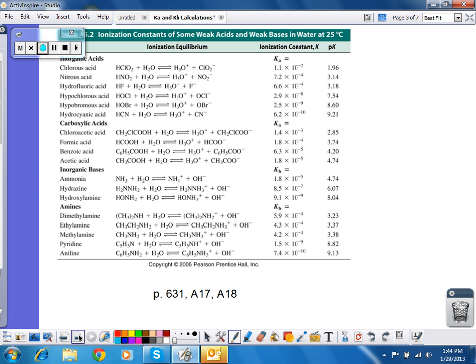So, let's take a look at some calculations. But before we do that, this is a table of K values, Ka and Kb. This is in your book on page 631. There are also tables on page A17 and A18, which are in appendix A, in case you ever need to look up equilibrium values.